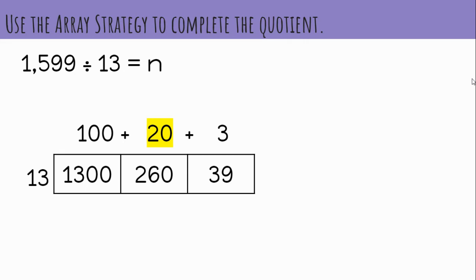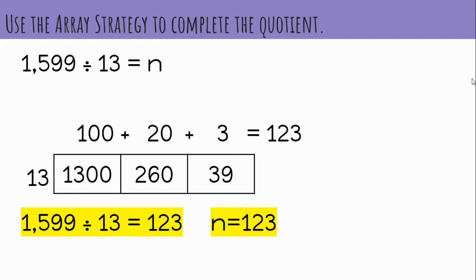Now find the sum of the partial quotients for the final answer. 123 is the quotient. So remember, you can also write the answer using the variable to show that n equals 123.